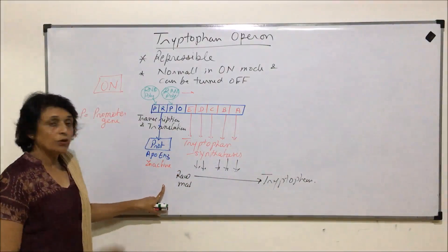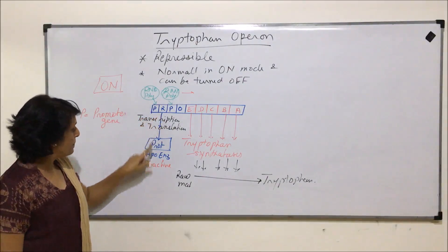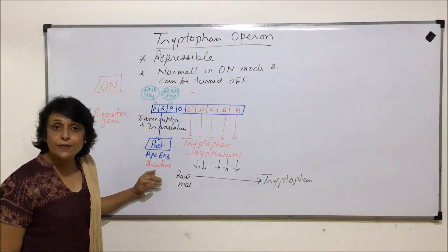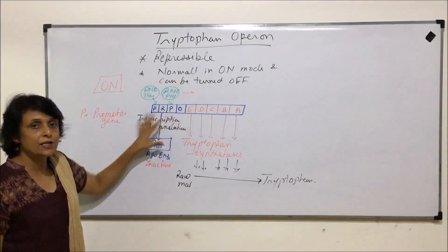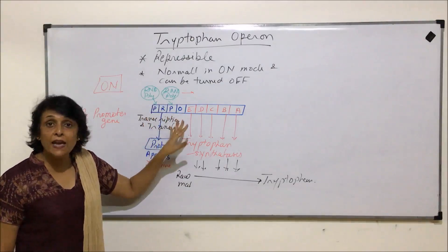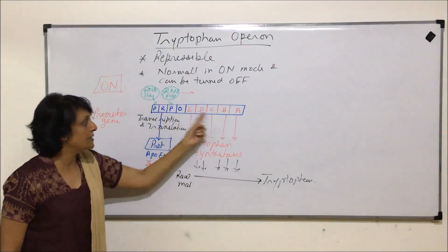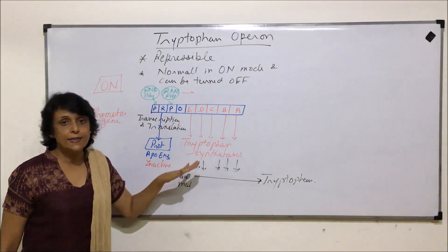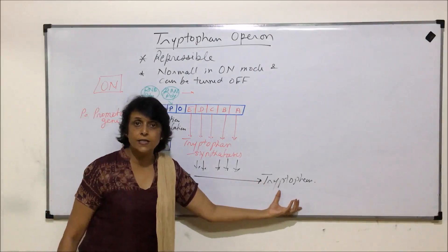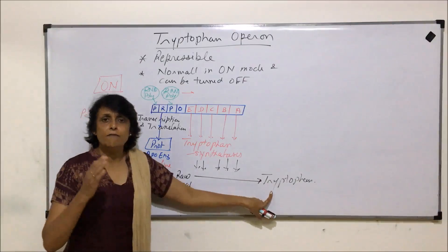Tryptophan is continuously produced because it is continuously used and needed by the cell, so this is in ON mode. In this situation, the first promoter gene has RNA polymerase attached; the repressor gene undergoes transcription and translation and a protein is synthesized. That protein acts as an apoenzyme and remains inactive, so it doesn't attach anywhere. Because the operator gene is free and not blocked, all five enzymes get transcribed and translated to form tryptophan synthetases, and tryptophan is synthesized.